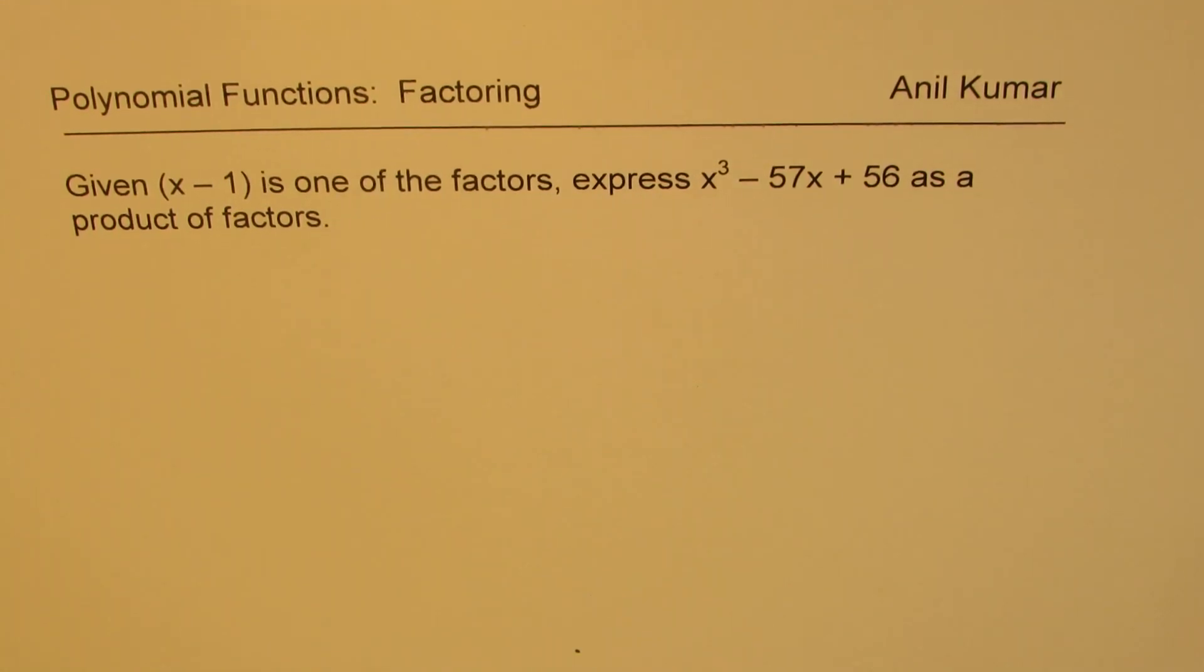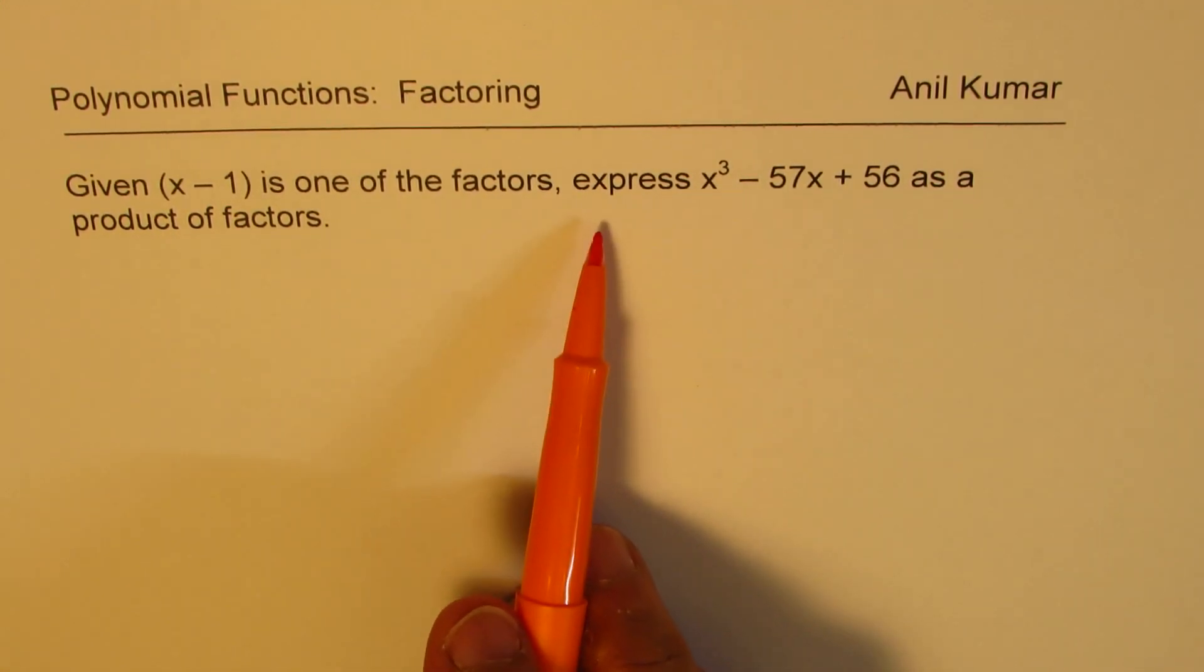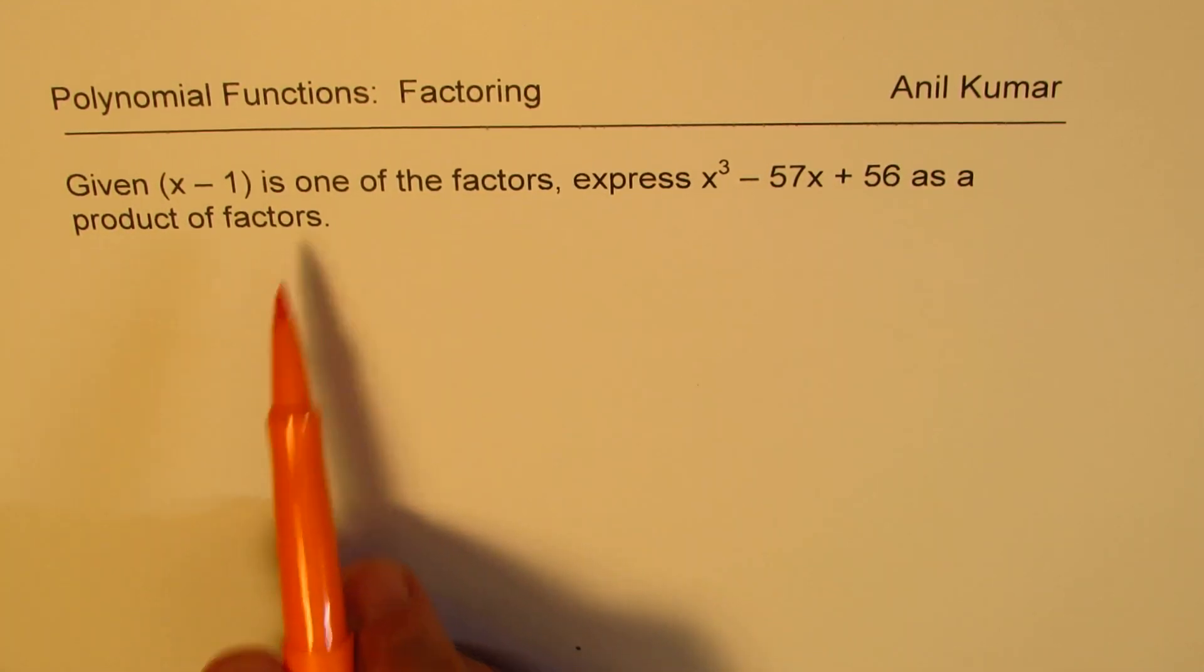I'm Anil Kumar sharing with you a test question based on polynomial functions. Given x minus 1 is one of the factors, express x cubed minus 57x plus 56 as a product of factors.